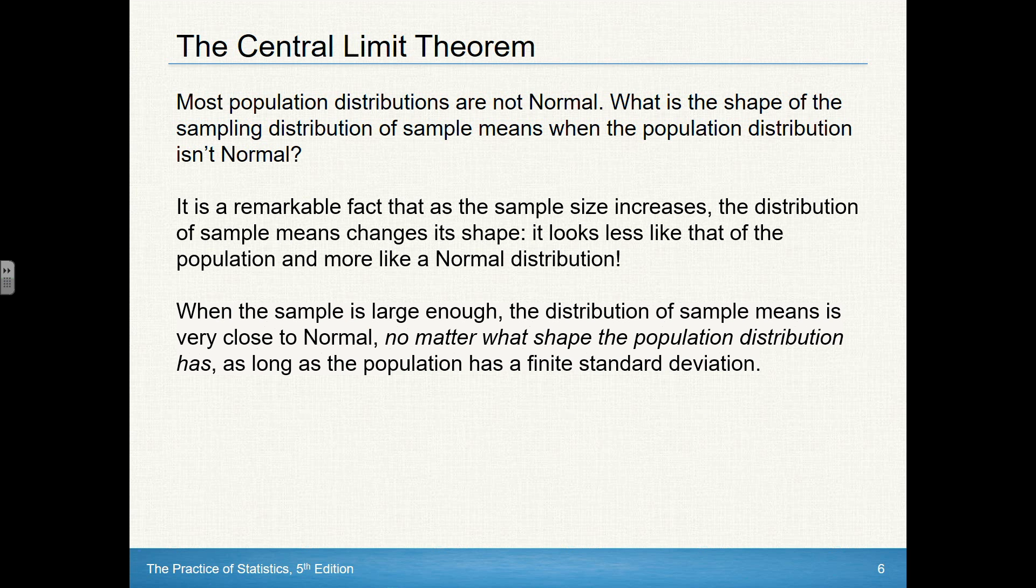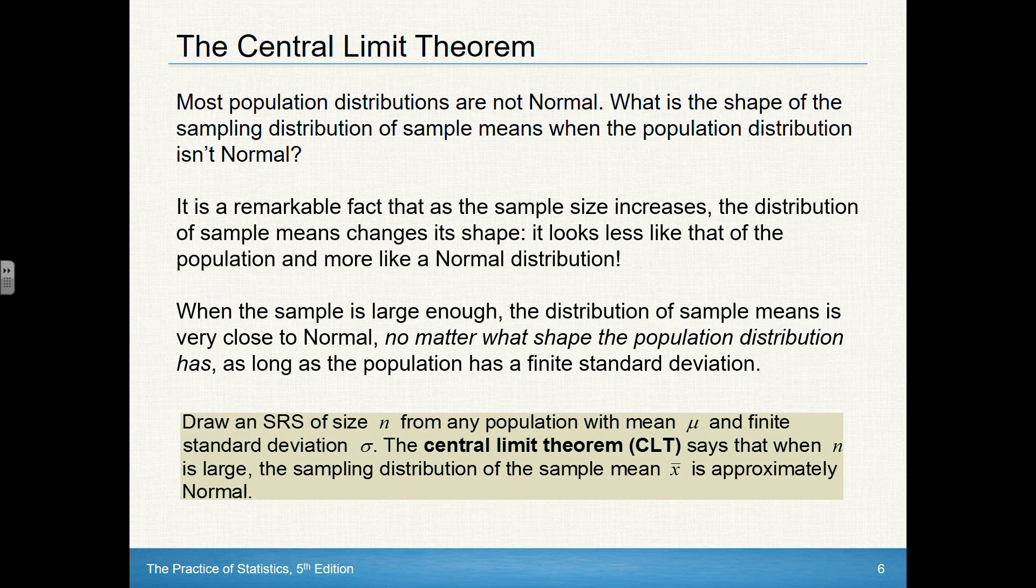Now, you might be asking yourself how large is large enough. Generally speaking, we say that it has to be at least 30. So in the green box down at the bottom here, if you draw an SRS of size N from any population with mean mu and finite standard deviation sigma, the central limit theorem, or CLT as we'll call it, says that when N is large, again at least 30, the sampling distribution of the sample mean x bar is approximately normal.